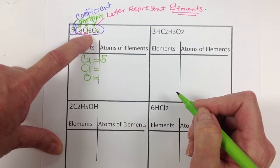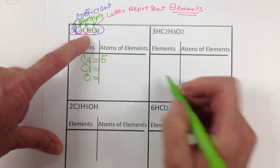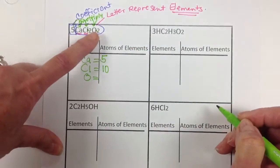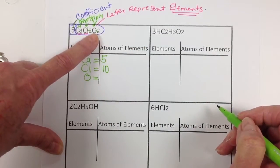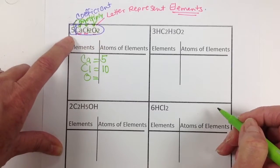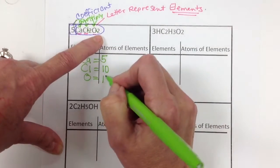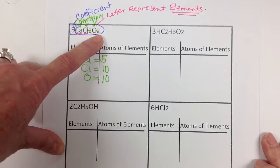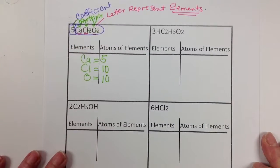We had two chlorine, now we have five times that two chlorine, that means we have ten. And we had two atoms of oxygen, now we have five times those two, meaning we also have ten atoms of oxygen. Alright, very good job.